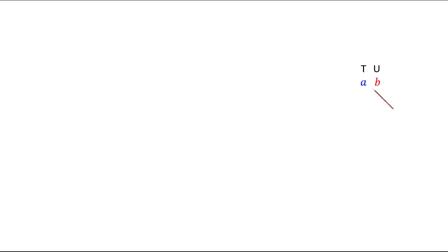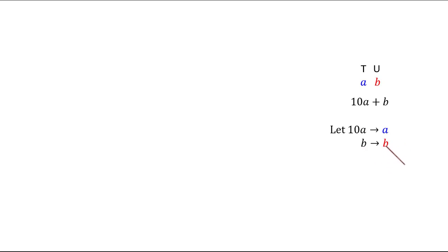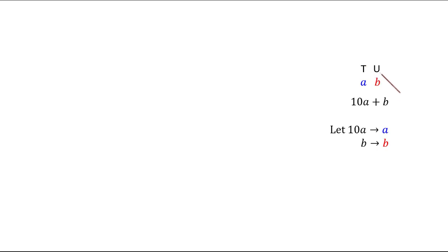Now we are going to understand the general derivation of why this method works for any given number. Let us take a two-digit number where the digit in the tens place is A and the digit in the units place is B. This number is 10A + B. For convenience, let us write 10A as A in blue and B as B in red — A has a place value 10 times more than B. So A is in the tens place and B is in the units place.